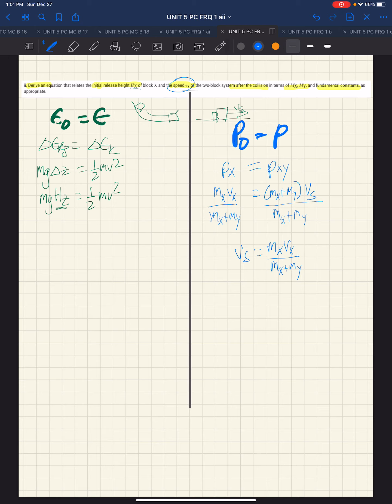So, what we see is we have vs here, we have hx here, and we're looking for the relationship between hx and vs.